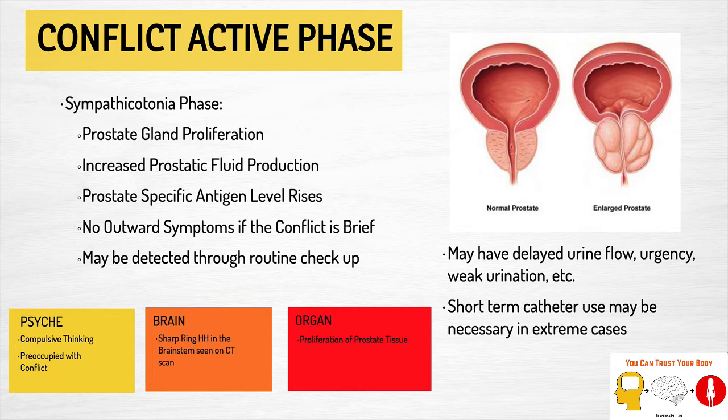Looking at the three levels — psyche, brain, and organ — when a man is conflict active, he is preoccupied with the conflict, thinking about it a lot with compulsive thinking, whether it's thinking about rejection or a potentially cheating spouse. He's got all these thoughts and emotions, having trouble sleeping, in sympathetic mode. On the brain level, there is a sharp ring formation in the brainstem that can be seen on CT scan. On the organ level, there is proliferation of prostate tissue.